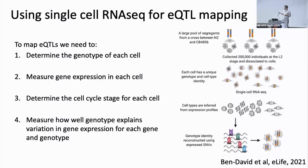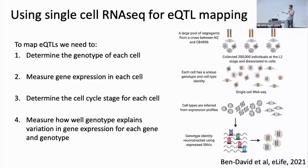The approach we took was borrowed from a paper from Leonid Krugliak's lab, where they did essentially this same approach using C. elegans worms. They generated large pools of recombinant worms, dissociated all the cells, performed single-cell RNA sequencing, and inferred gene expression from each of these single cells. From the individual reads within these single-cell RNA-seq data, using known genetic variance, they could genotype particular mutations and infer patterns of recombination specific to an individual cell — and that is exactly the process that we follow here.